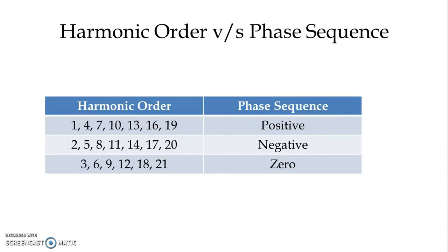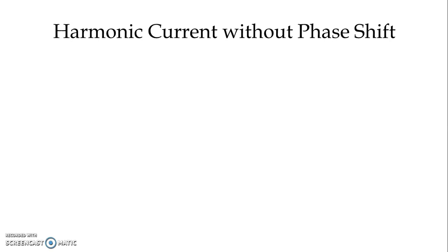If we check harmonic orders versus their phase sequence: harmonics 1st, 4th, 7th, 10th, 13th, 16th, 19th are all positive sequence harmonics. Harmonics 2nd, 5th, 8th, 11th, 14th, 17th, 20th are negative sequence harmonics. Third and multiples of three — the triplen harmonics — are zero sequence harmonics: 3rd, 6th, 9th, 12th, 18th, 21st, etc. The expressions considered so far for harmonics have zero phase shift with respect to the fundamental.